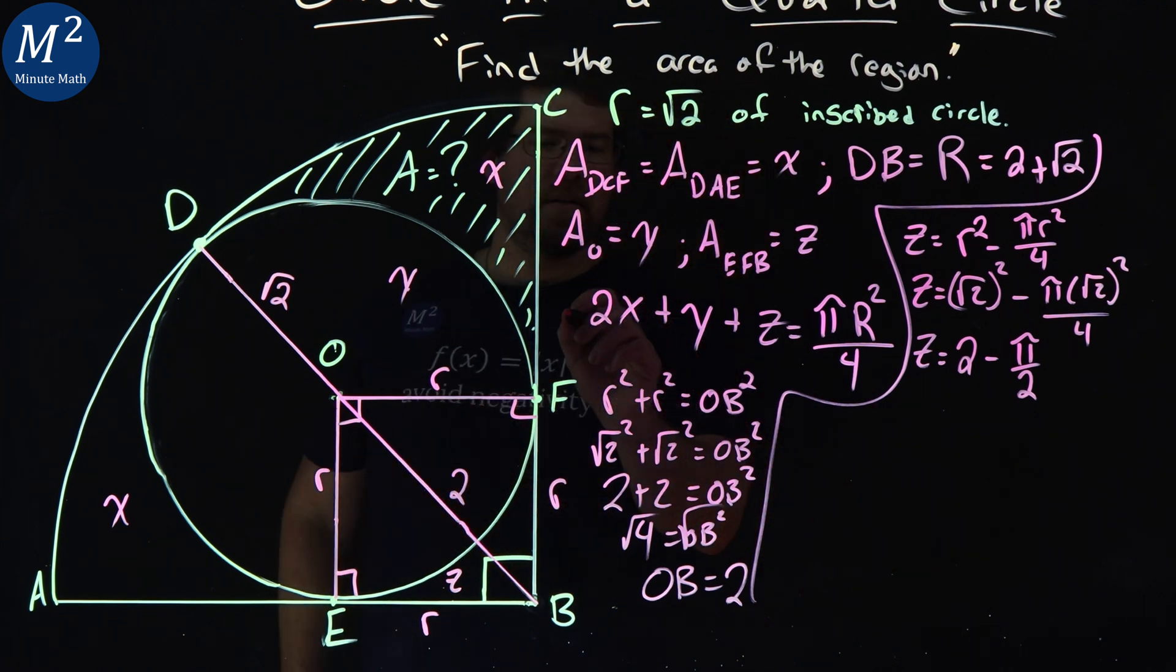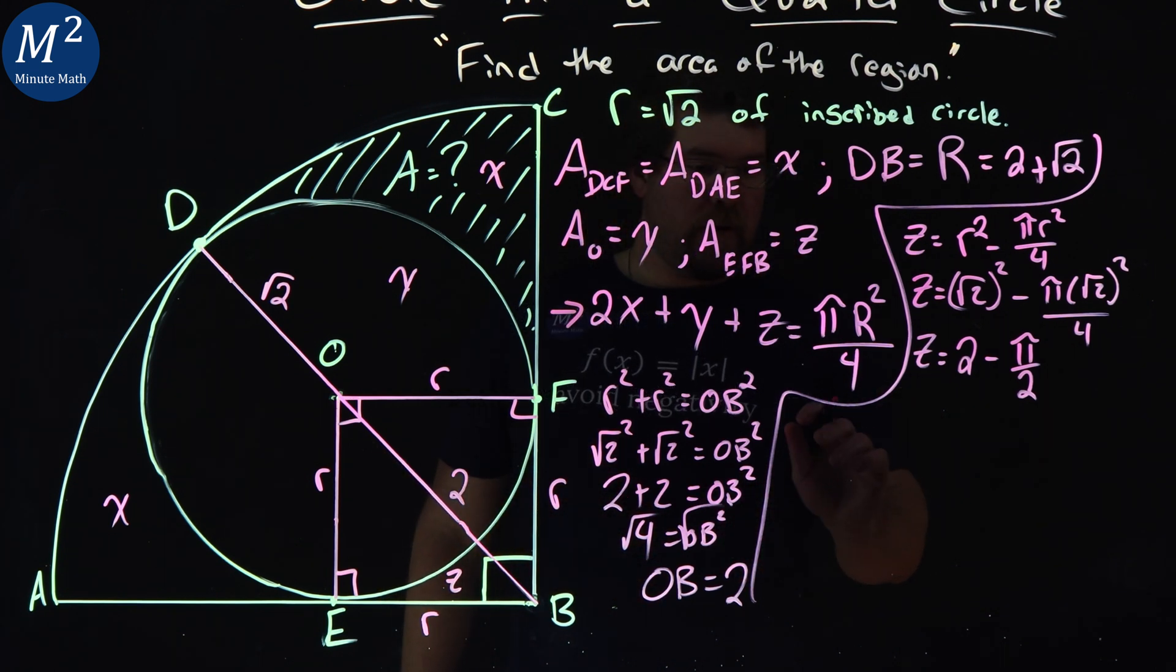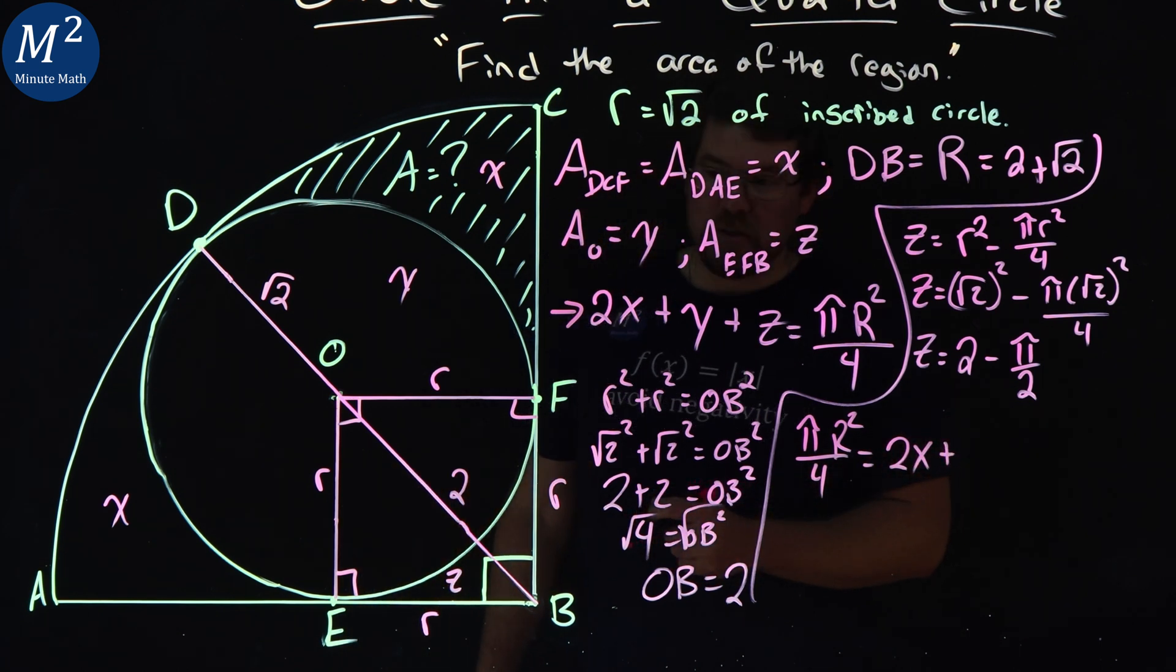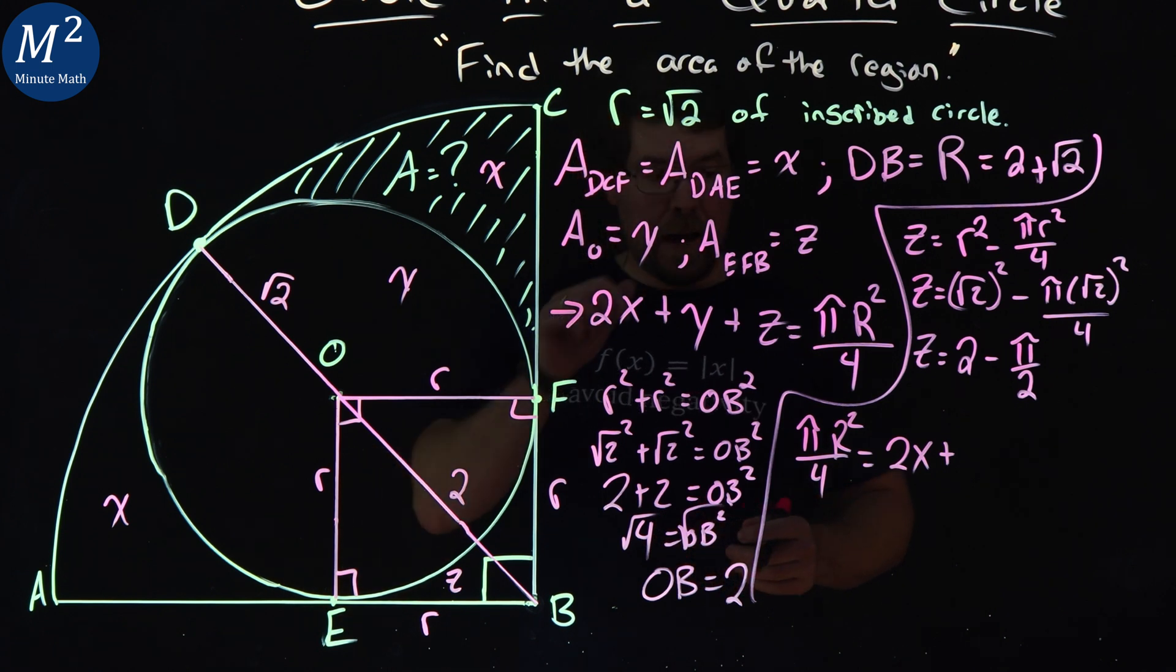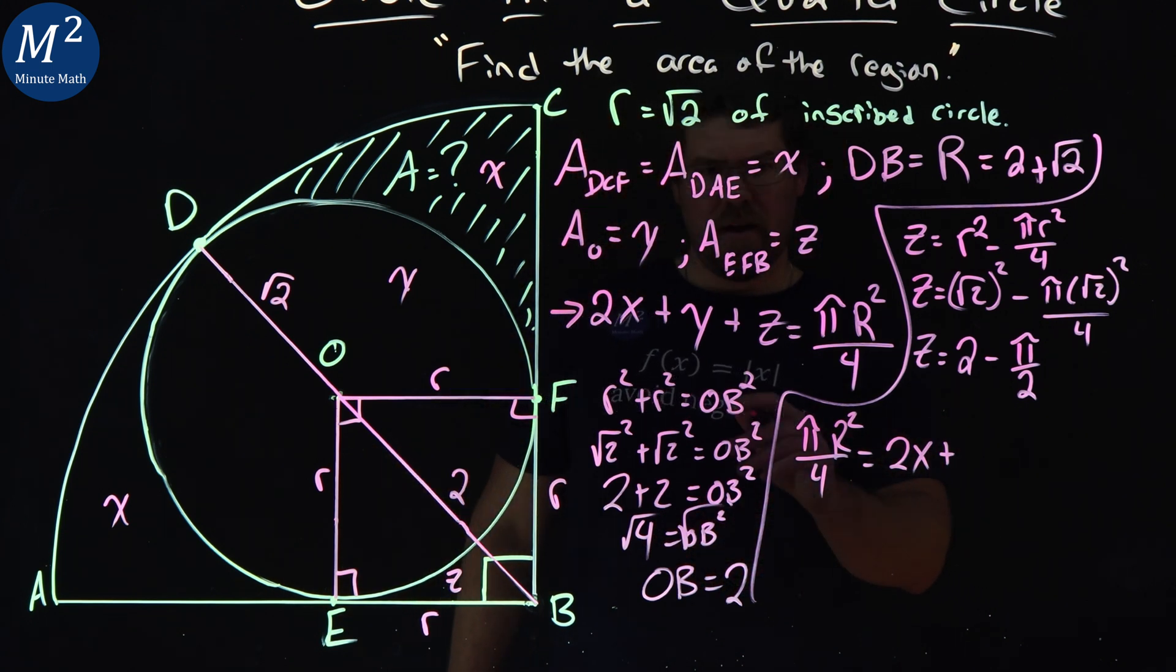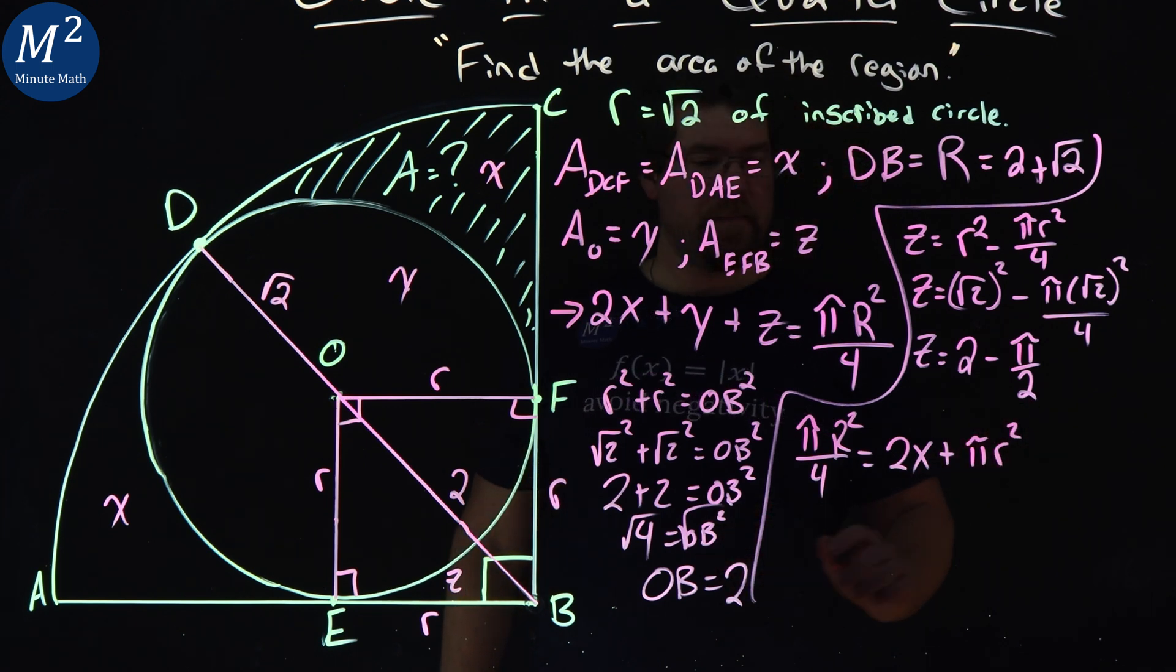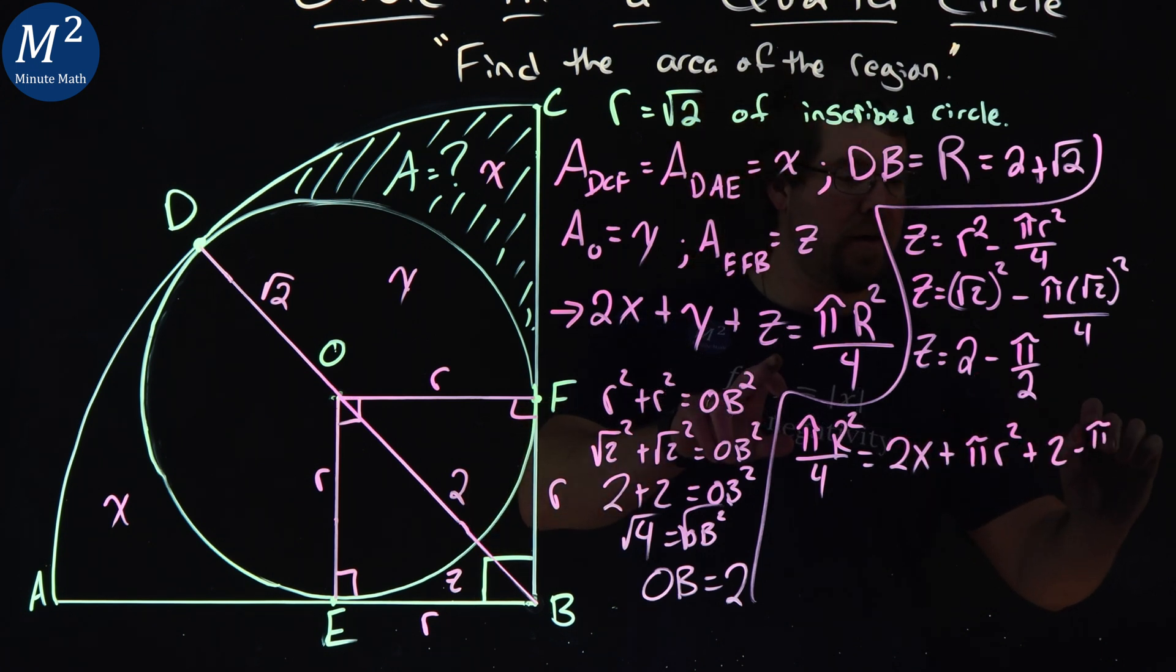And now let's go plug it into this lovely equation. So I'm going to flip it around. I'm going to put the pi R squared over 4 first here. So pi big R squared over 4 is equal to 2X plus, well, instead of Y, the area of the little circle, which is pi R squared, plus our region Z, which is 2 minus pi over 2.